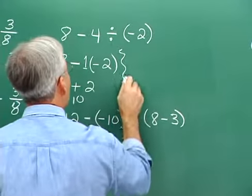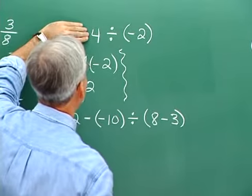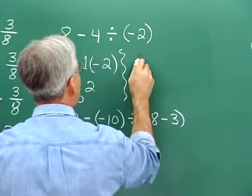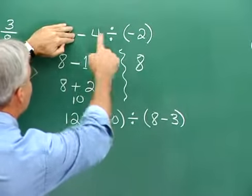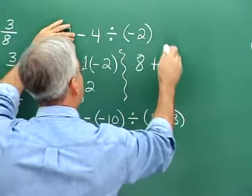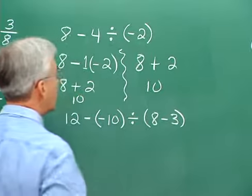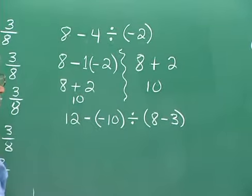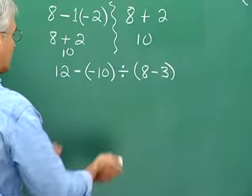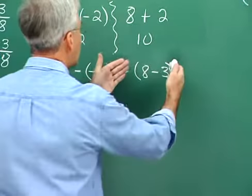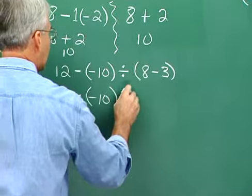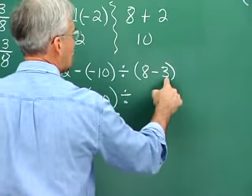Here's another one. The order of operations agreement says to look inside parentheses. In the first parenthesis, we're already in simple form. In the second parenthesis, we can simplify — 8 minus 3 is 5. So we have 12 minus negative 10, then divided by 5.